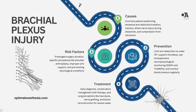Next up is the brachial plexus — a network of nerves that controls the muscles and sensation in the shoulder, arm, and hand. Injuries here are often more severe and can occur when the arm is excessively stretched or compressed during surgery. A review published in Clinical Anatomy 2021 emphasizes that brachial plexus injuries are frequently associated with high-risk surgeries such as those involving shoulder or neck manipulation. Common causes include excessive shoulder abduction or extension, direct trauma, and compression from surgical devices. Prevention includes maintaining proper arm positioning, avoiding excessive shoulder abduction, and using monitoring techniques to detect potential issues early.